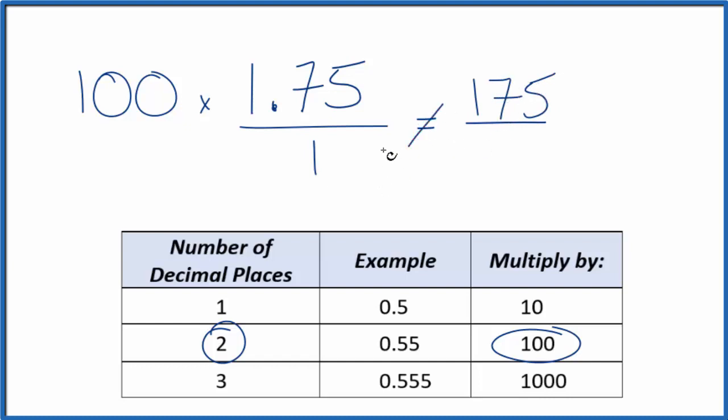But 175 is not equal to 1.75, so we also need to multiply the bottom by 100. When we do that, 100 times 1 gives us 100.